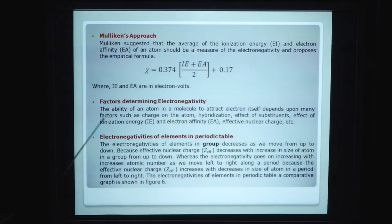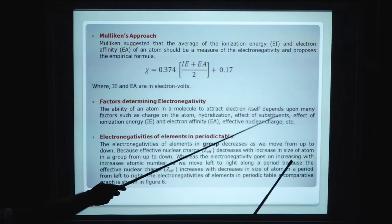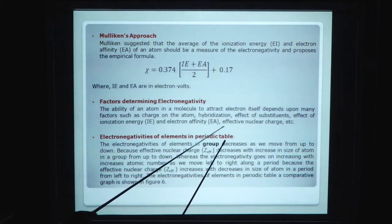Mulliken approach. Mulliken suggested that average of the ionization energy and electron affinity of an atom should be a measure of the electronegativity and proposed empirical formula. Electronegativity chi equals 0.374 times (ionization energy plus electron affinity) divided by 2 plus 0.17, where IE and EA are in electron volts. The factors that determine electronegativity are the ability of atom in a molecule to attract electrons to itself, which depends on many factors such as charge on the atom, hybridization, effect of substituent, ionization energy, electron affinity, effective nuclear charge, etc.